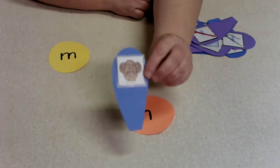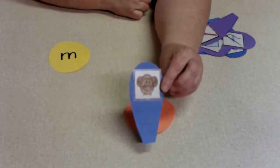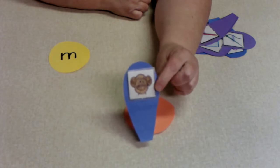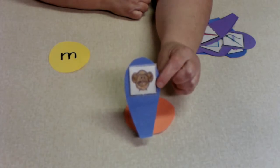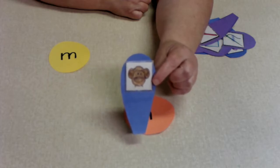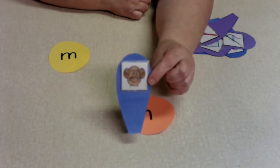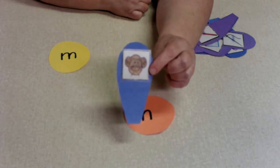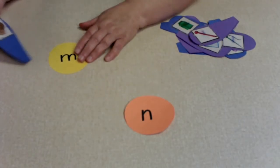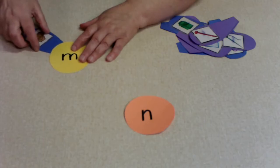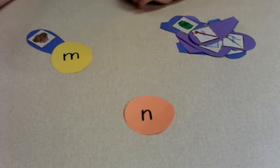We're going to pick from this pile and say the name of the picture and decide whether it begins with the M or the N sound. So this is a monkey. Monkey begins with the M sound. So we're going to slide our monkey right under here.